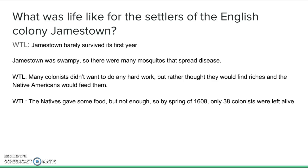Another big issue was that the colonists didn't want to do any hard work. They actually expected to just search for gold and riches, and that Native Americans would come and give them food. That was not the case. The Native Americans were kind, and a chief named Powhatan did lend them some food, but it was not enough. By the spring of 1608, one year after they had arrived, only 38 of the original colonists were still alive.